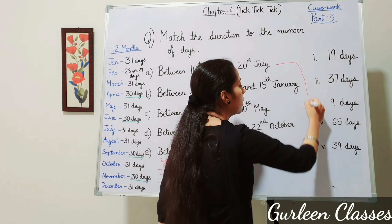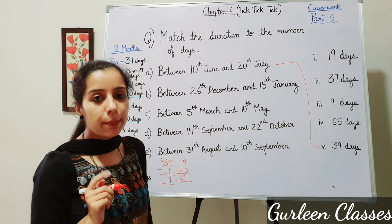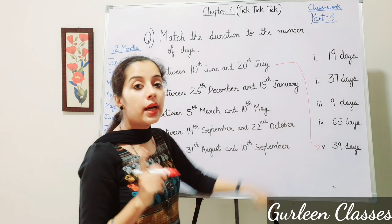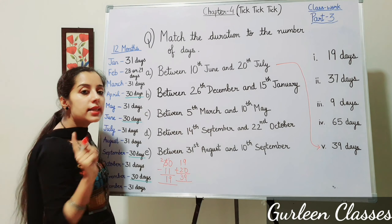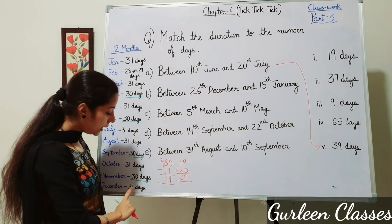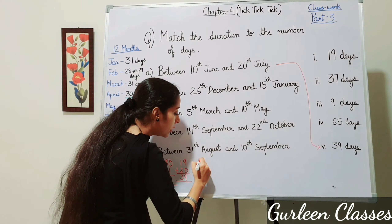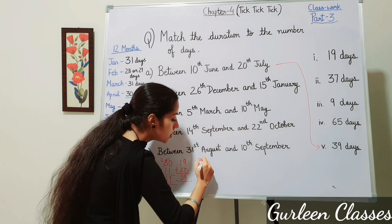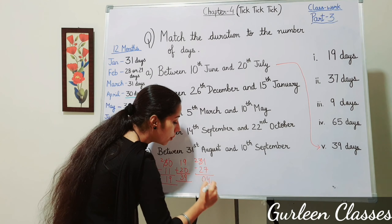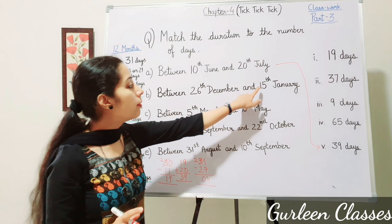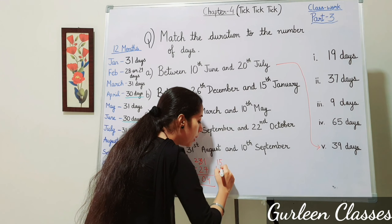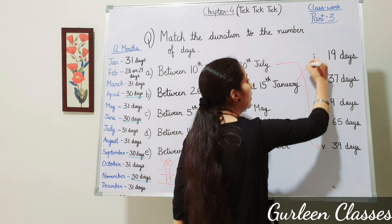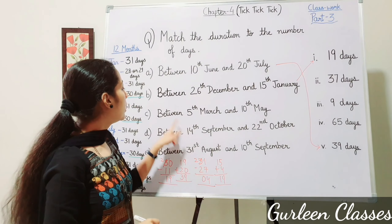Part B: between 26th December and 15th January. December has 31 days. From 26th December: 31 minus 27 equals 4 remaining days in December. Then add 15 days of January: 4 plus 15 equals 19 days.